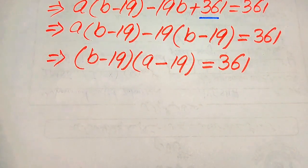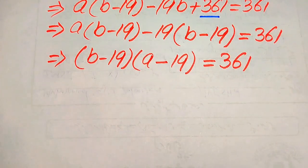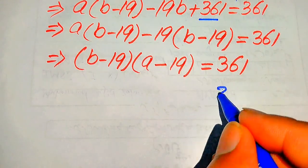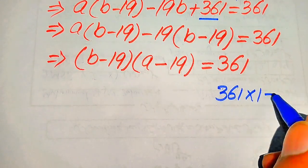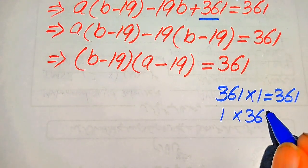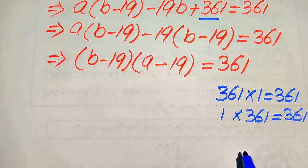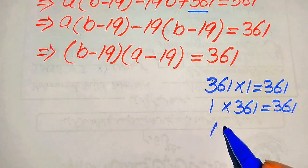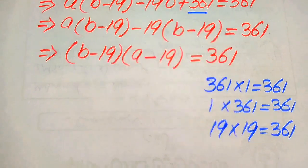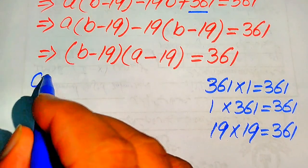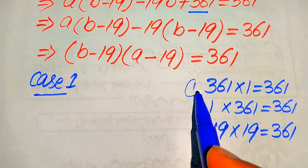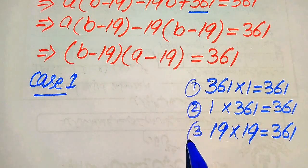We now find all possibilities where the product of two numbers equals 361. The possibilities are: 361 times 1 equals 361; 1 times 361 equals 361; and 19 times 19 equals 361. From these we form three cases to find the values of a and b.